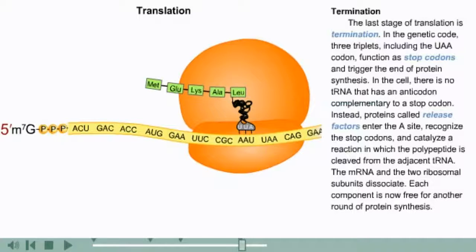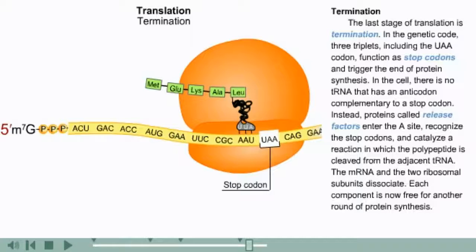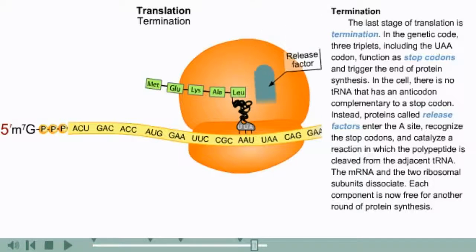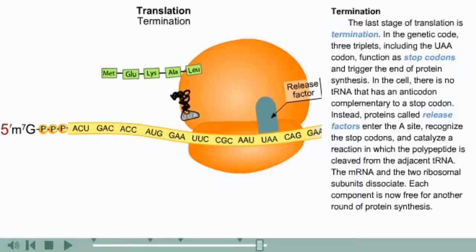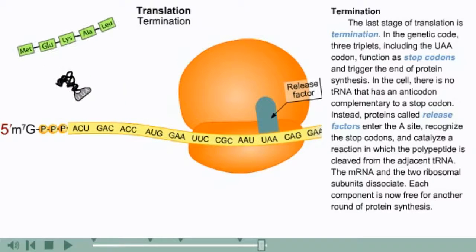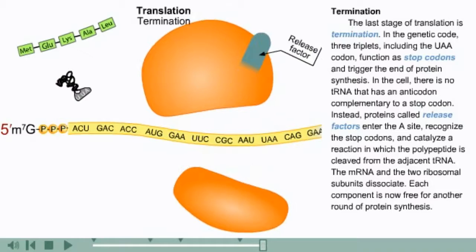The last stage of translation is termination. In the genetic code, three triplets, including the UAA codon, function as stop codons and trigger the end of protein synthesis. In the cell, there is no tRNA that has an anticodon complementary to a stop codon. Instead, proteins called release factors enter the A site, recognize the stop codons, and catalyze a reaction in which the polypeptide is cleaved from the adjacent tRNA. The mRNA and the two ribosomal subunits dissociate, and each component is now free for another round of protein synthesis.